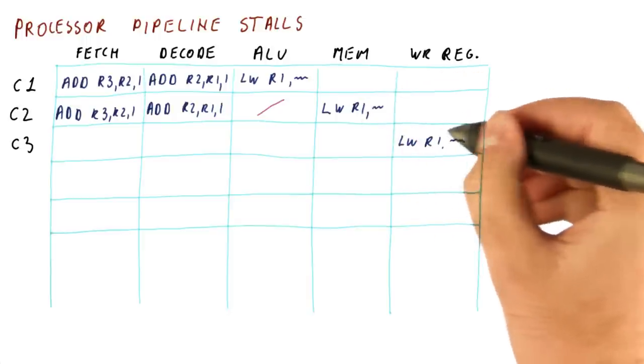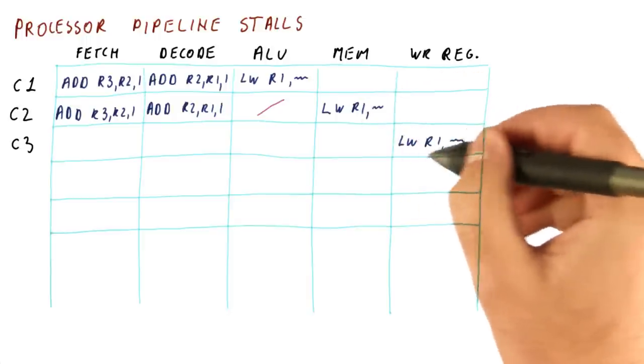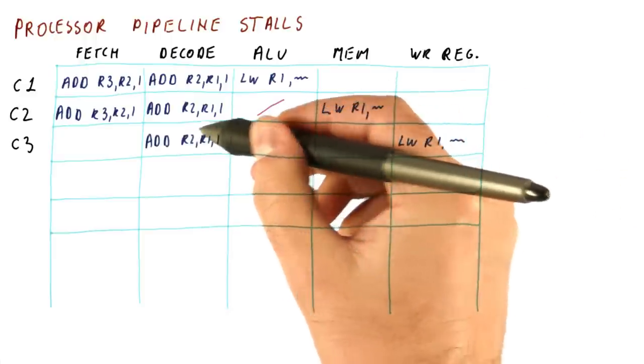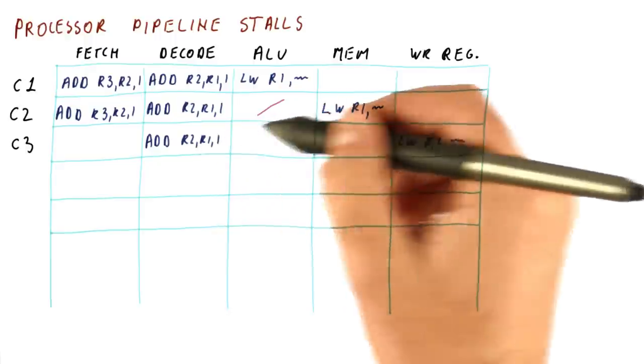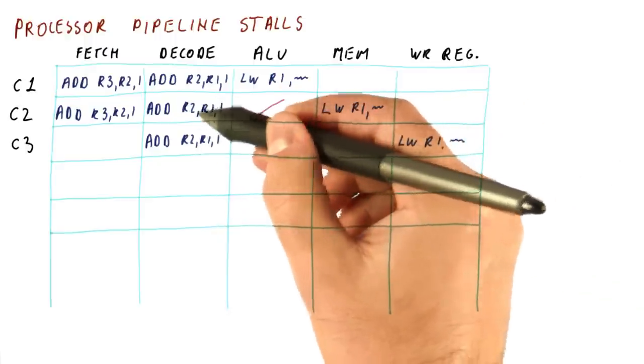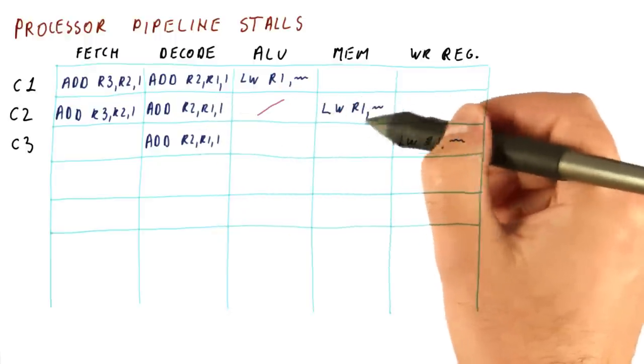The add needs to repeat the read of R1 because in this cycle here, it still didn't get the correct value of R1. Although the load was now loading that value from memory, the R1 was not written yet.